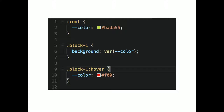On the root element we're creating a custom property called color, set to a hex value. Within a block, we're setting the background to this color. You can see how we do it — we have the var() function and then we just call the custom property. That works straight out of the box as part of the CSS specification.